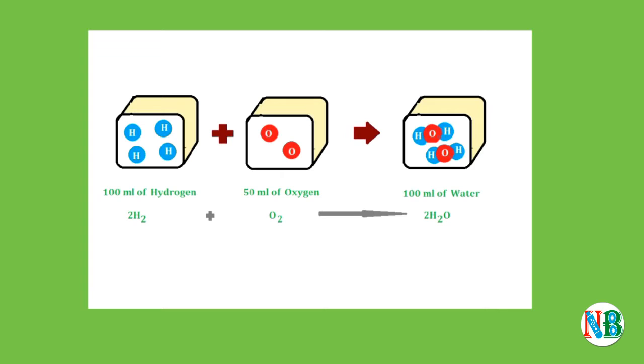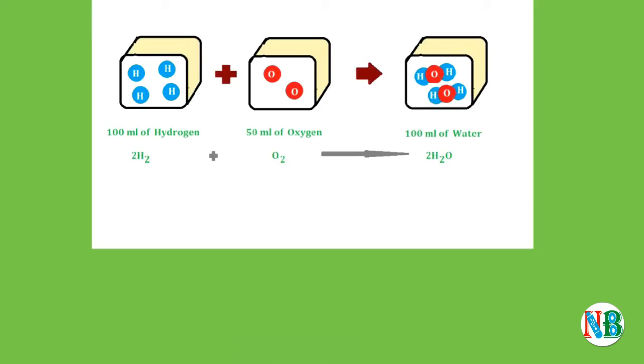Gay-Lussac's discovery of integer ratio and volume relationship is actually the law of definite proportions by volume, but law of definite proportion was with respect to mass.